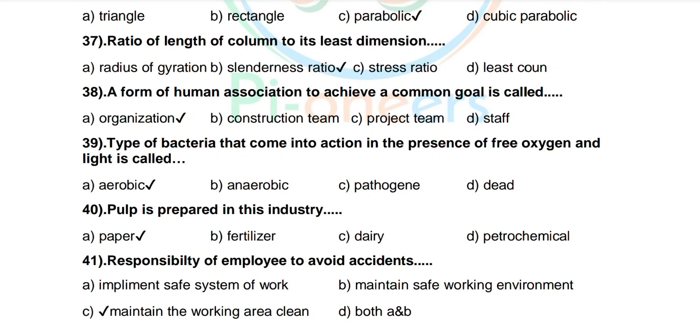Question number 41: Responsibilities of employer to avoid accidents. Options are implement safe system of work, maintain safe working environment, maintain the working area clean, both A and B. Correct answer: maintain the working area clean.